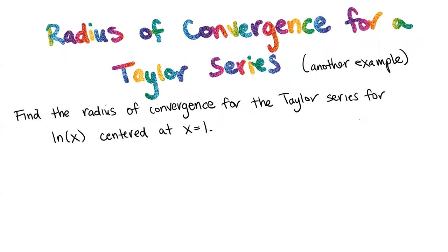In the previous video, we saw the calculation for the radius of convergence for e to the x, and now we're going to calculate the radius of convergence for another Taylor series. In this example, we're going to look at the natural log of x and the Taylor series for it centered at x equals 1. Our goal here is to find the radius of convergence for this Taylor series.